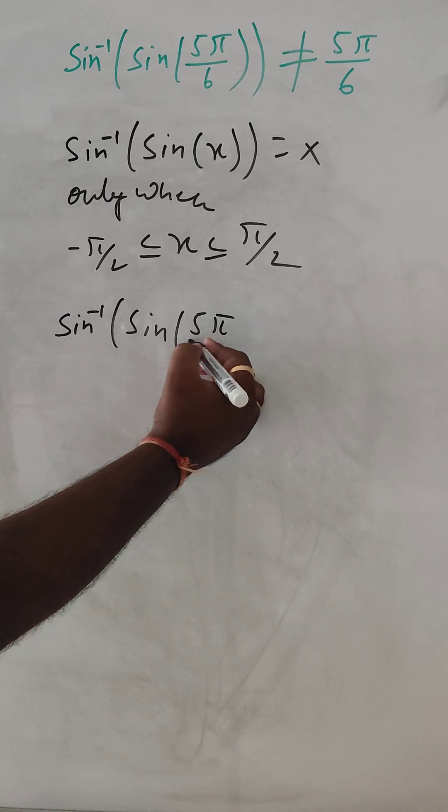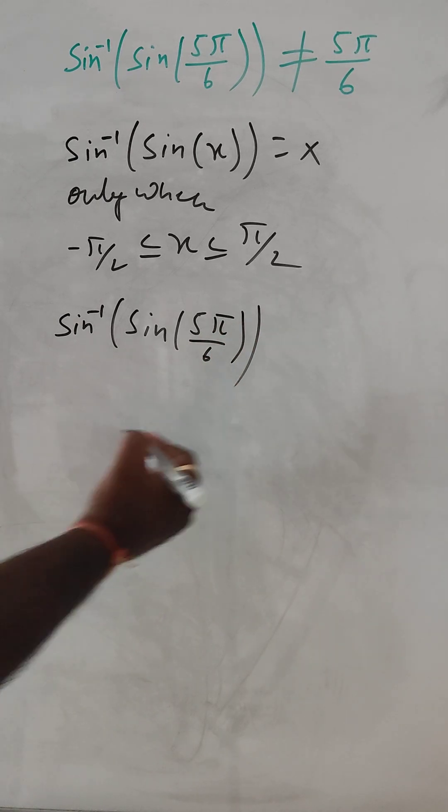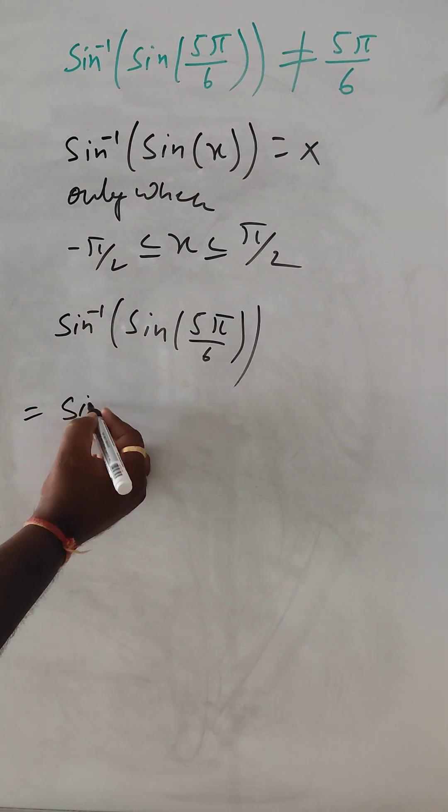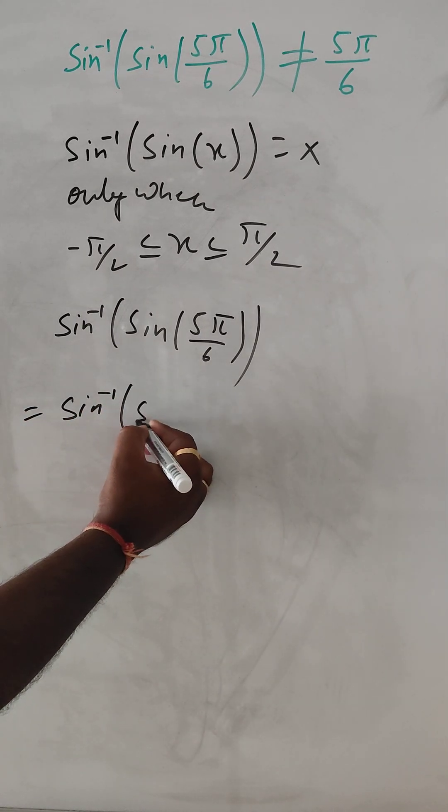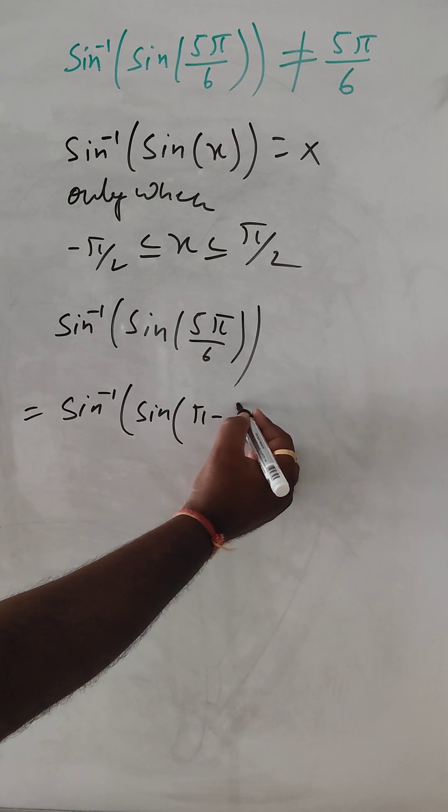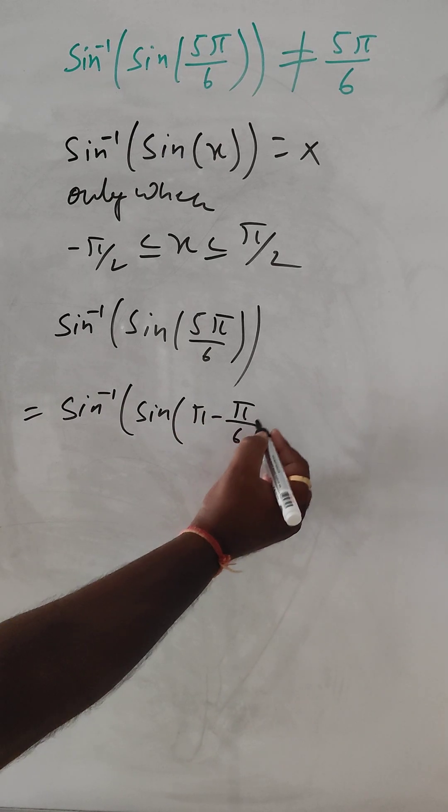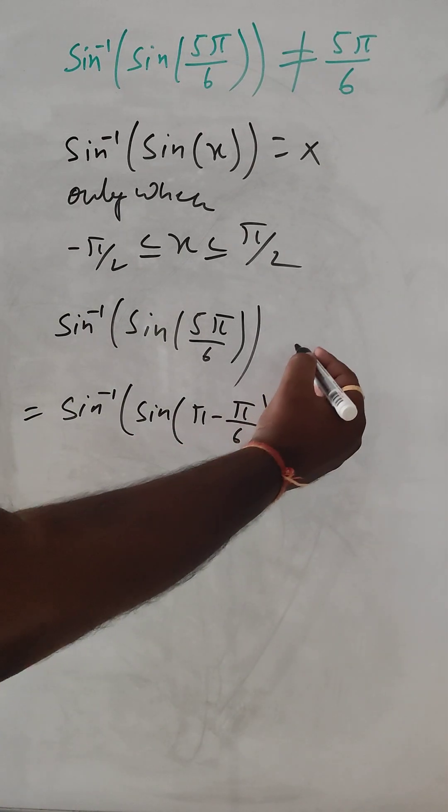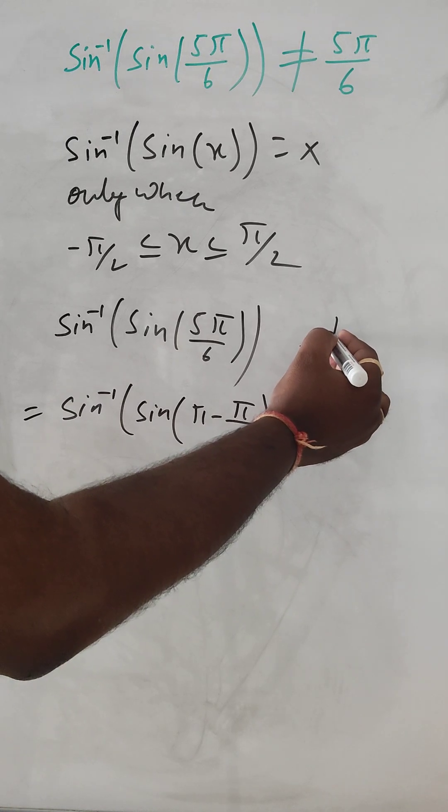This is the question we should simplify. This means sin inverse sin (π minus π by 6). So π minus π by 6, this is in the second quadrant, right?